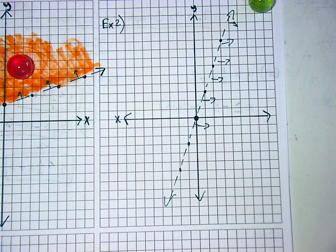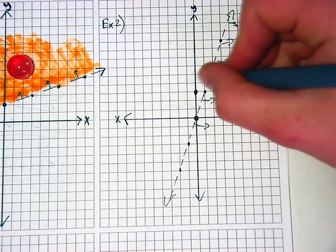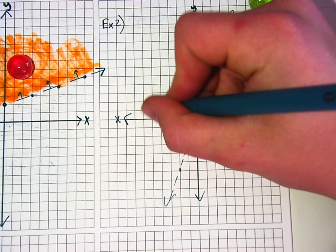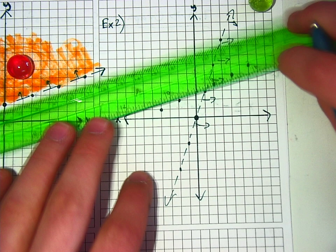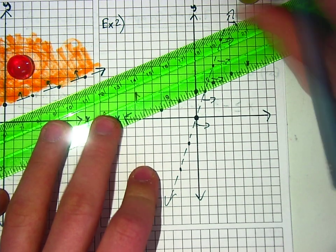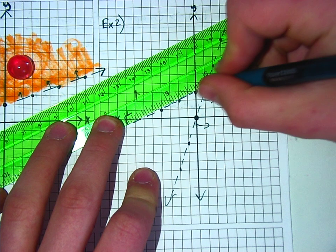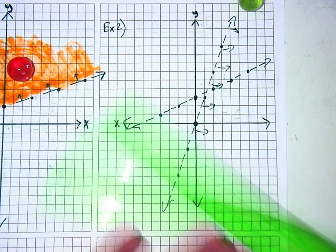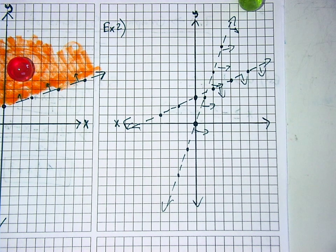And then you do the second equation, y less than 1 half x plus 3. And you start at 3 on the y. And then you go up 1 over 2. And then you're going to shade below it. Oh, it's a dotted line too. Yeah, you're going to shade below it. And then it intersects at the bottom right corner.